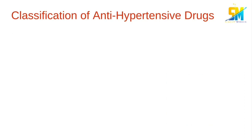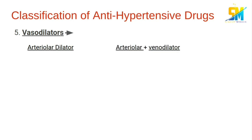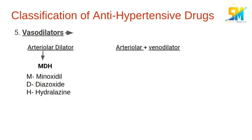The fifth category is the vasodilators, which include arteriolar dilators and arteriolar plus venodilators. The mnemonic for arteriolar dilators is MDH: minoxidil, diazoxide, and hydralazine. The drug in the arteriolar plus venodilator category is nitroprusside sodium.